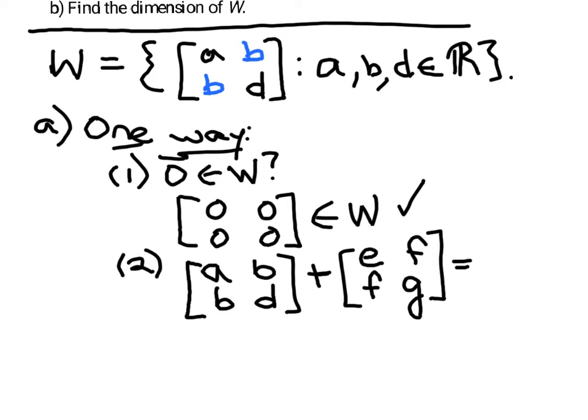If I add those together, then I'd have A plus E here, B plus F here, B plus F again down here, just adding the corresponding entries, and D plus G right here. So this is still a symmetric 2 by 2 matrix. These entries match; it doesn't matter what we have along the main diagonal there.